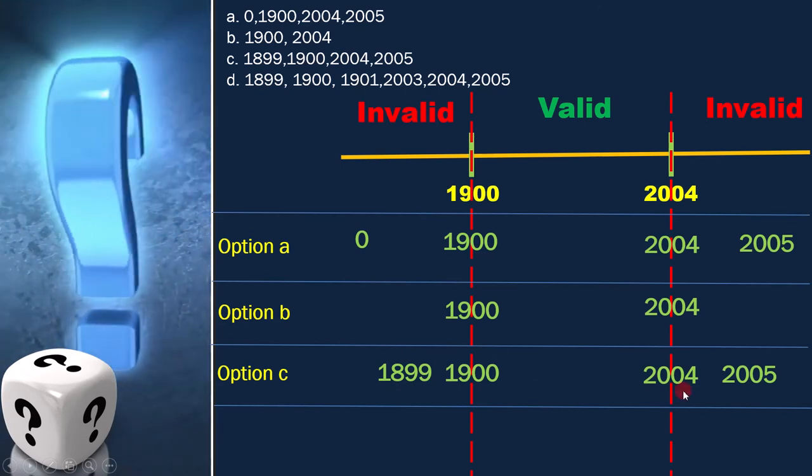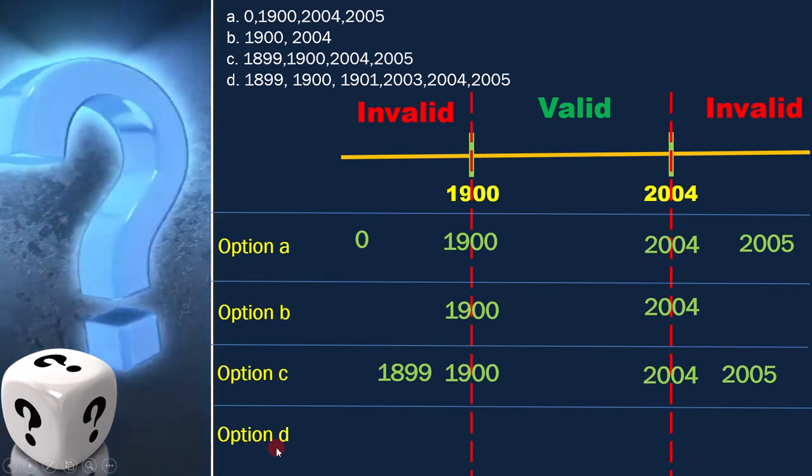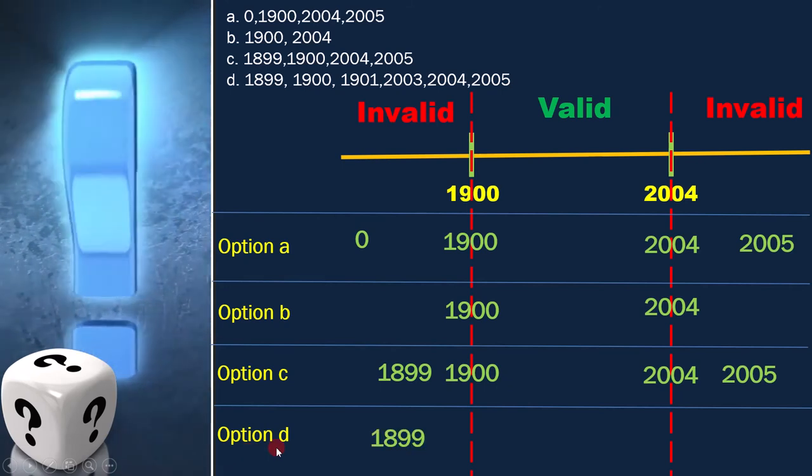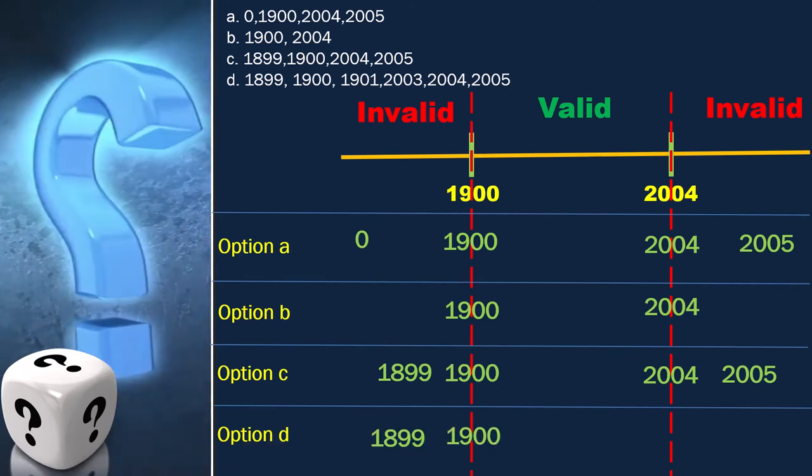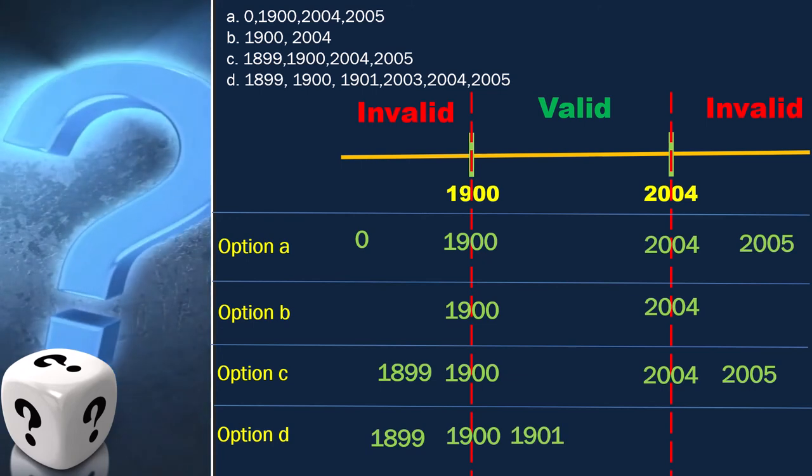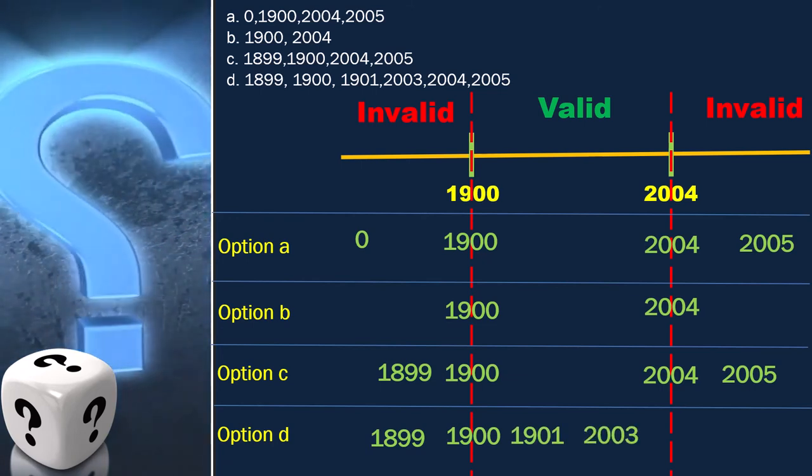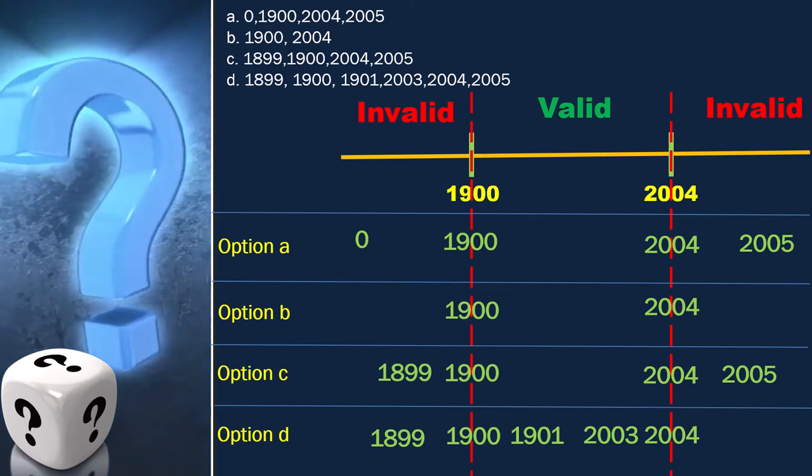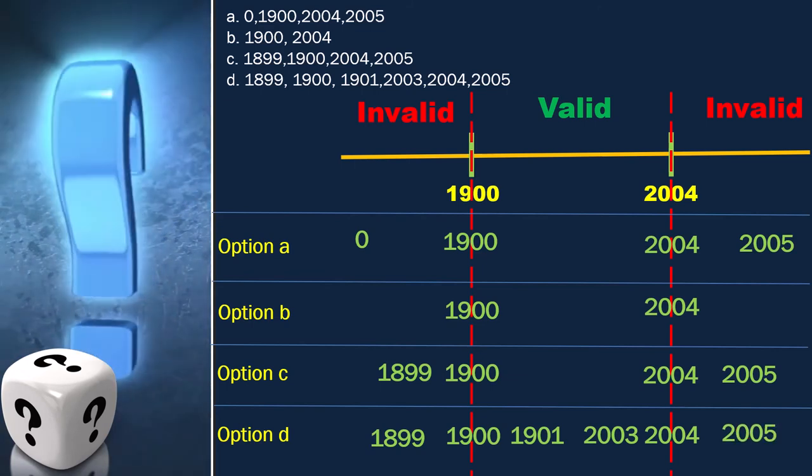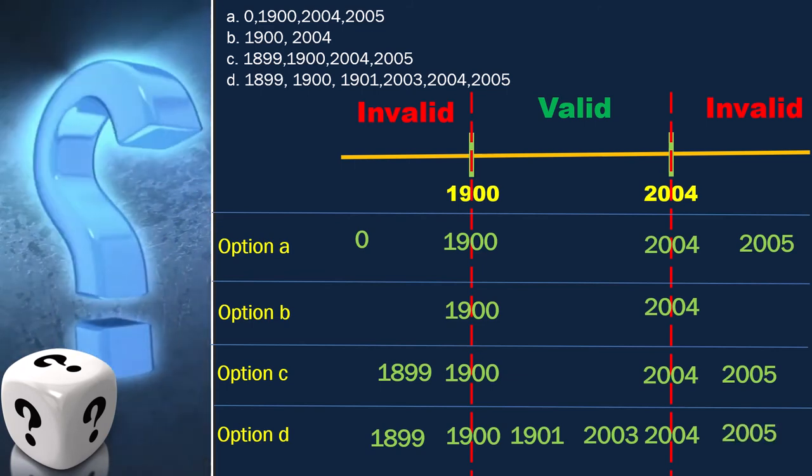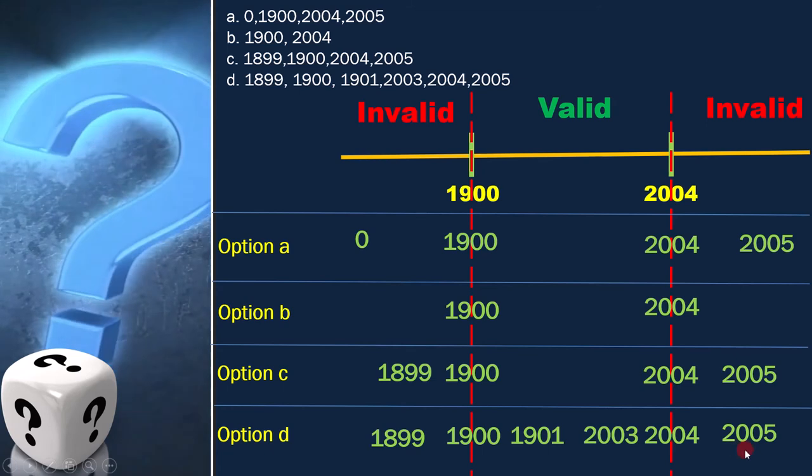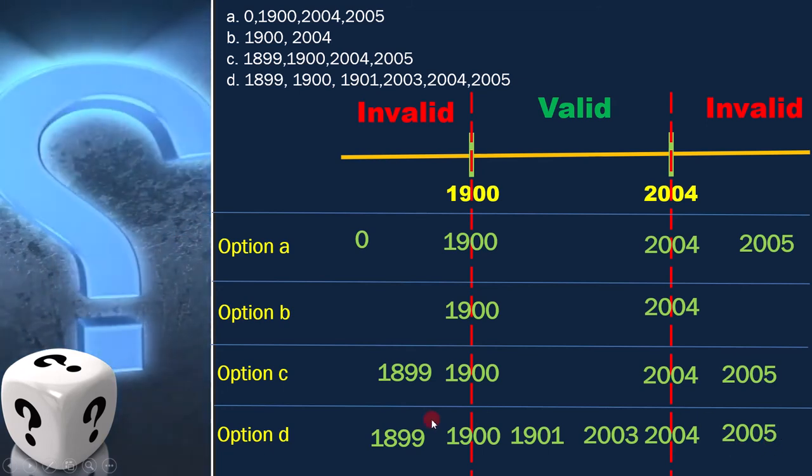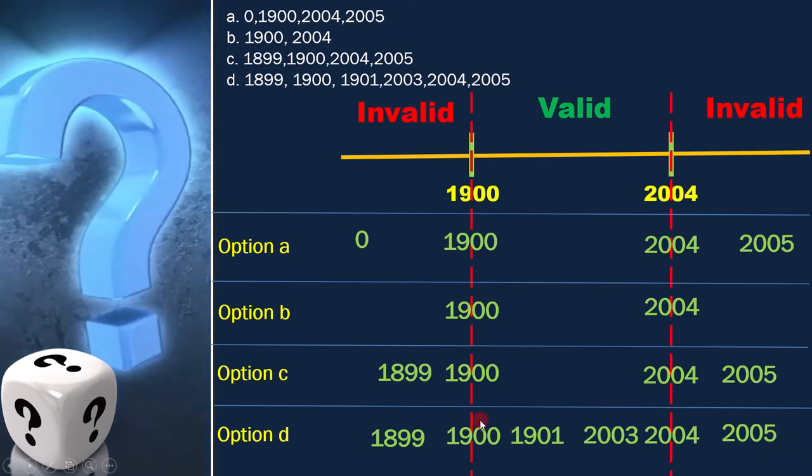Now let's move to the next option. Option 4 is 1899, 1900, 1901, 2003, 2004, and 2005. We can place it here. This is a classic example of three-point boundary value analysis.